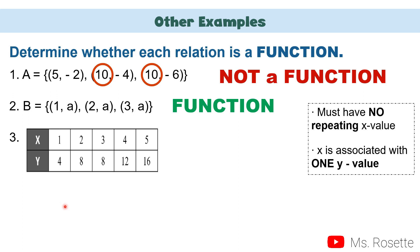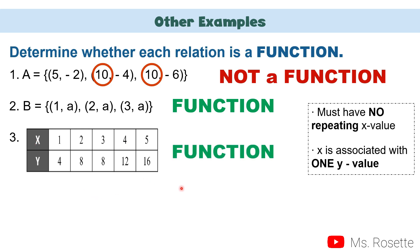For number 3, we have a table of values. Values of x are 1, 2, 3, 4, and 5. Values of y are 4, 8, 8, 12, 16. You just have to look at the x values and observe if they have repeating values. As you can see, there is no repeating x value. Therefore, this is considered a function.